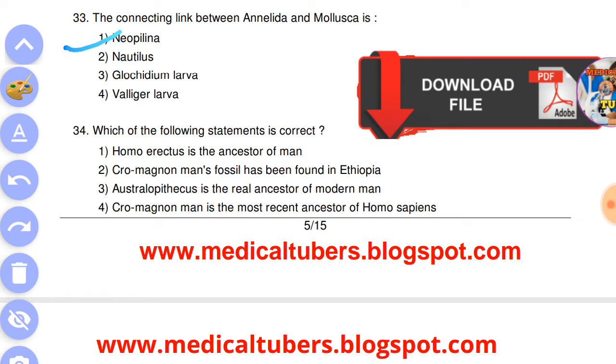Next question: which of the following statements is correct? Answer is the fourth, Cro-Magnon man is the most recent ancestor of Homo sapiens.